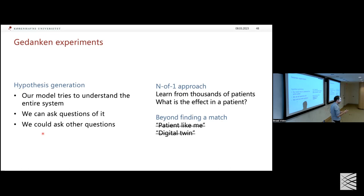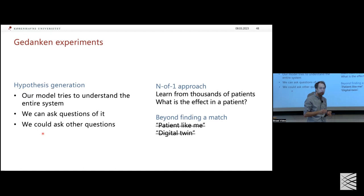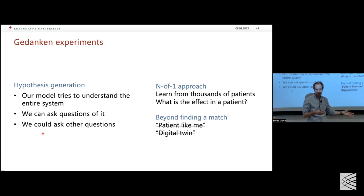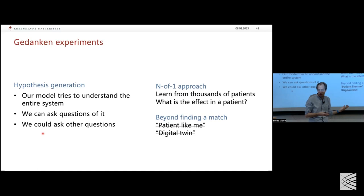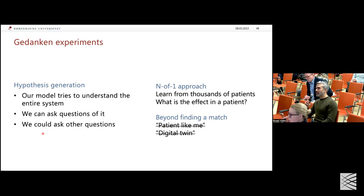On the metformin confounding issue: this cohort was cross-sectional with one time point and newly diagnosed individuals, so we couldn't easily separate the drug effect from the indication. One approach would be to remove the drug from the model entirely. With longitudinal data you could do better, but you'd need to structurally incorporate the temporal nature into the learning — something we're working on.